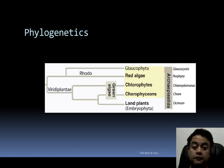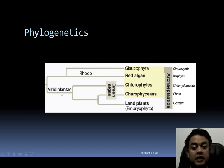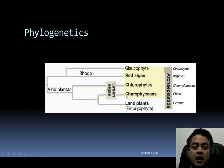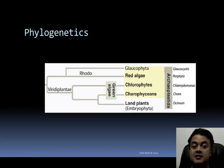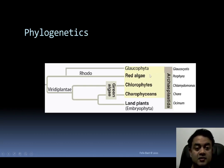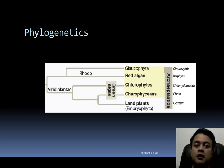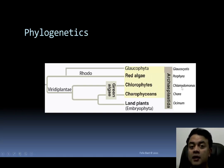Phylogenetically inside Archaeplastida, red algae and glaucophytes together form a clade — Biliphyta. Coming to Viridiplantae, land plants and Charophycinae together form a clade — Streptophyta. The so-called green algae is not monophyletic, but if defined as only chlorophytes, it does form one clade. Example of Glaucophyta: Glaucocystis. Red algae example: Porphyra — the Japanese edible seaweed 'nori,' the most expensive alga in the world, also found in India.